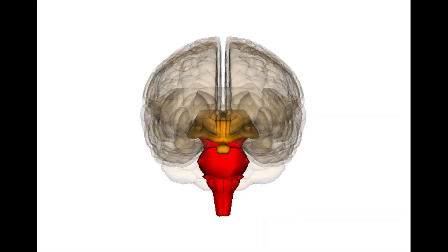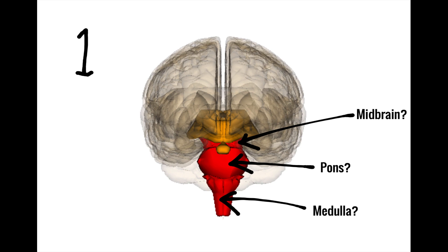Once you have a sense that a lesion is in the brainstem, your job then becomes to figure out exactly where. There are three questions to answer here. Number one: what part of the brainstem is the lesion in — the midbrain, the pons, or the medulla?